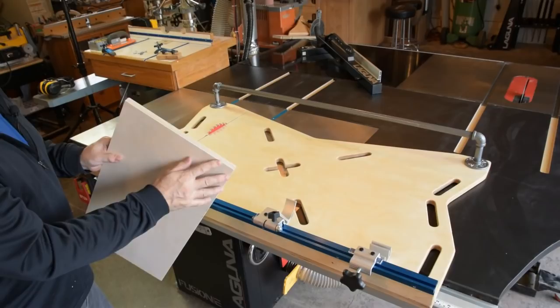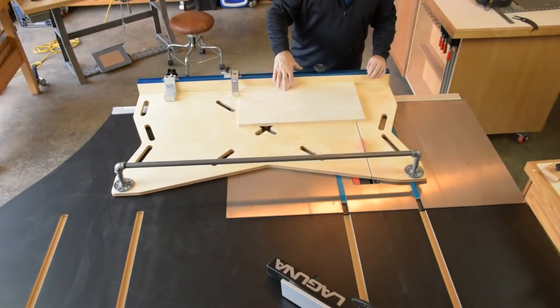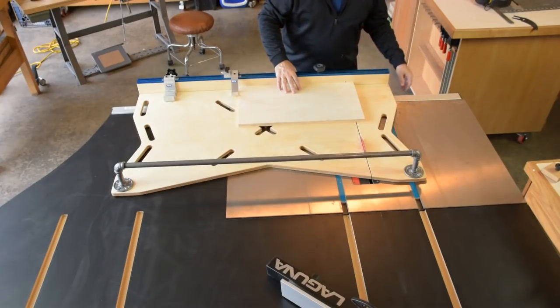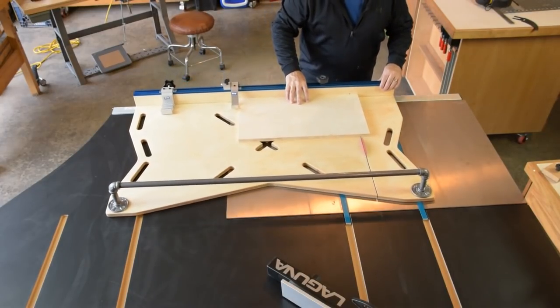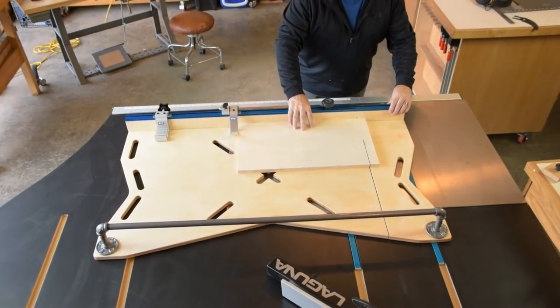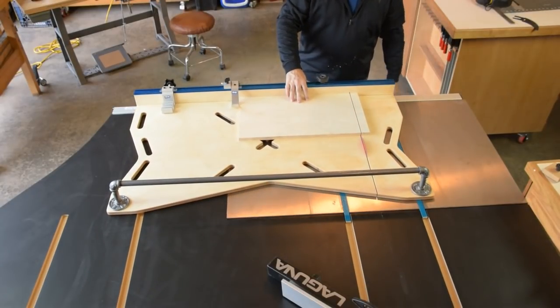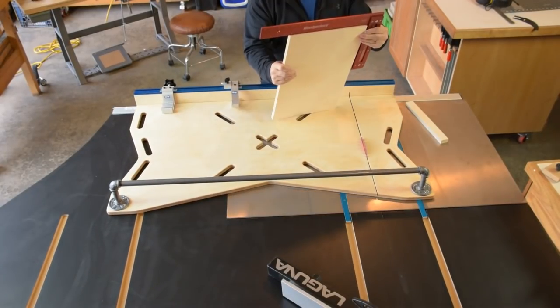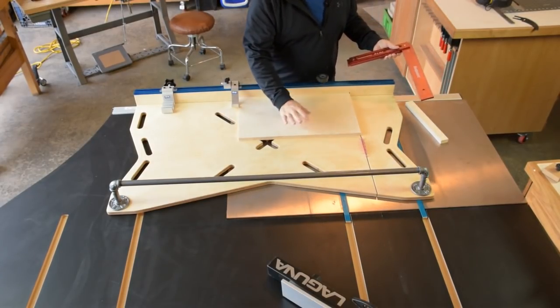Nice clean accurate cuts that are square every time. We've got automatic dust collection on the F2 so all I need to do is press the green start button and everything comes on automatically. Perfectly clean cuts that are square and accurate every time. What else could you want from a crosscut sled?